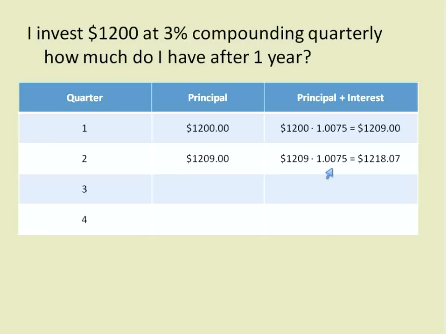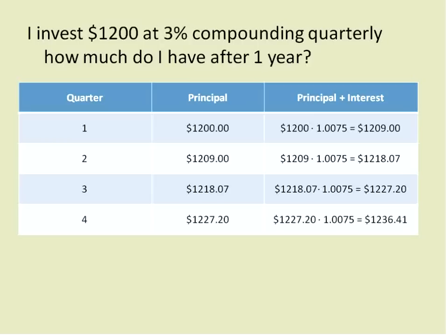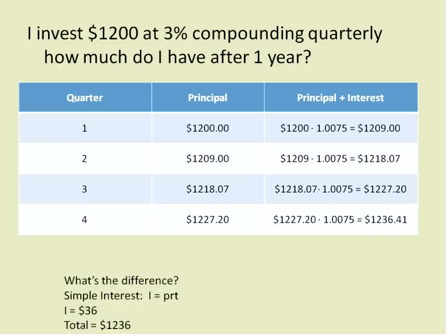Bringing that principal down: $1,209 times 1.0075 gives me an added $9.07, for a total of $1,218.07. That becomes my principal for the next quarter. I multiply it through for the next quarter, then for the final quarter. So in the course of one year, I have earned $36.41 in interest compounding quarterly.